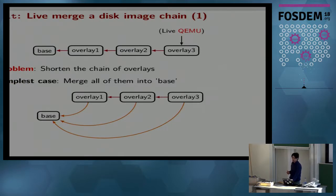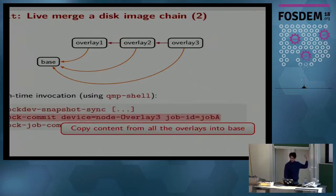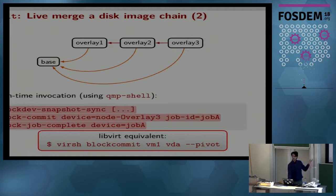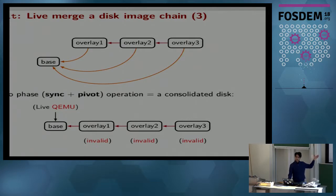There's a solution for that: the first is the live disk commit chain merge. When you have a long chain, the problem is to merge it down to a shorter one. The simplest solution is to merge all of them into the base image. You first run the snapshot command to create the three overlays, then you run the commit command to commit all content from the three overlays back into the base. Finally, you complete the commit job and pivot QEMU to the base. The result is a single consolidated base image with content from all three images merged; all intermediate images are then invalid and can be discarded. People also use this to make efficient disk snapshots — there are some wiki pages for that.